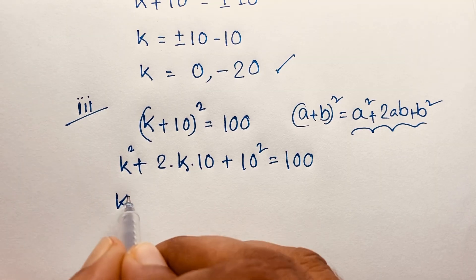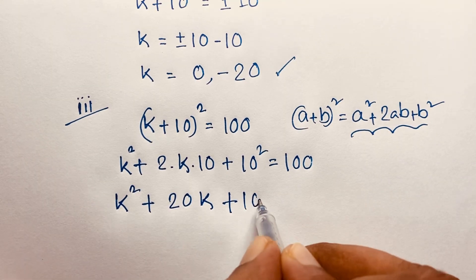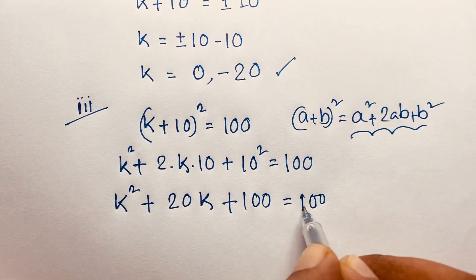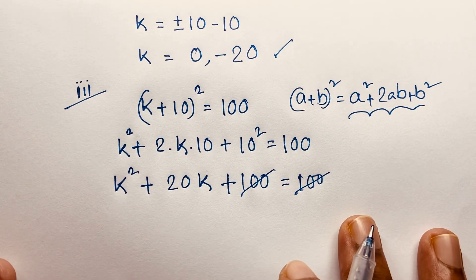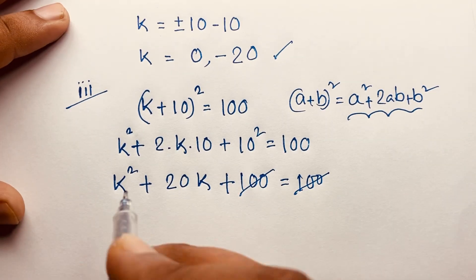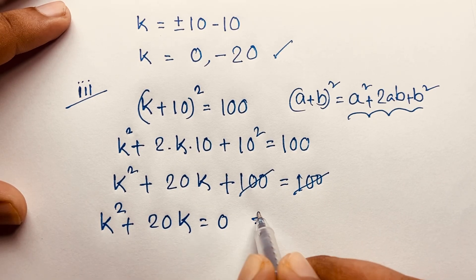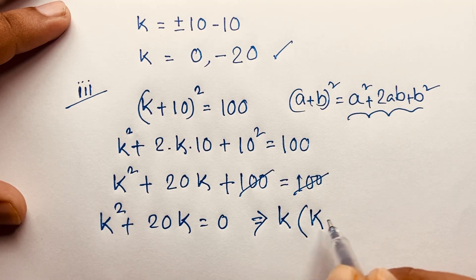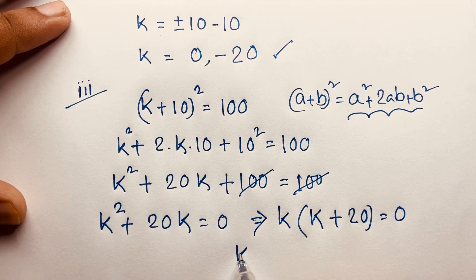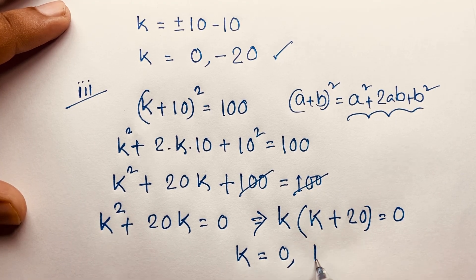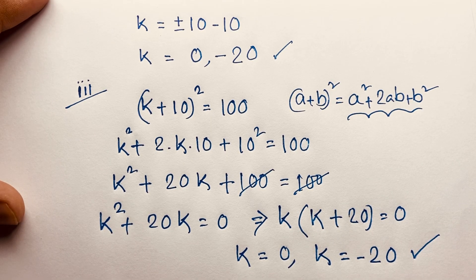So we have k² + 20k + 100 = 100. The 100s cancel out, giving k² + 20k = 0. We can see k is common, so it factors to k(k + 20) = 0. Again we find k = 0, and k + 20 = 0 gives k = -20. This is our final answer for this easy algebra math problem.